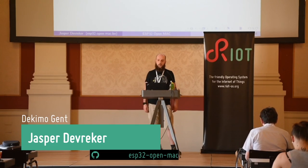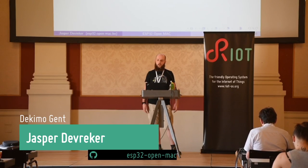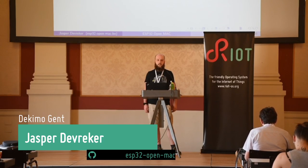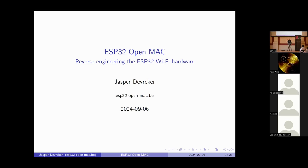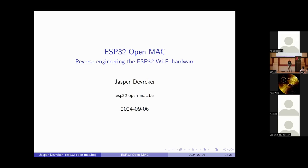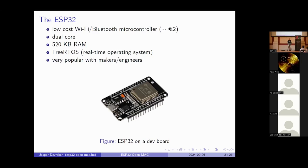I'm going to talk about reverse engineering the ESP32 Wi-Fi. Quick show of hands — who has worked with the ESP32 before? About 70% of the audience, so this should be your talk. The ESP32 is a very cheap Wi-Fi and Bluetooth microcontroller. It has two cores and about half a megabyte of RAM. If you use the default SDK, it runs FreeRTOS, and because of its cost and capabilities, it is of course very popular with makers and engineers.